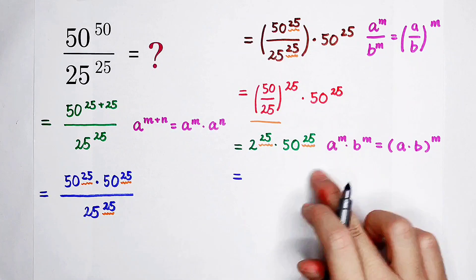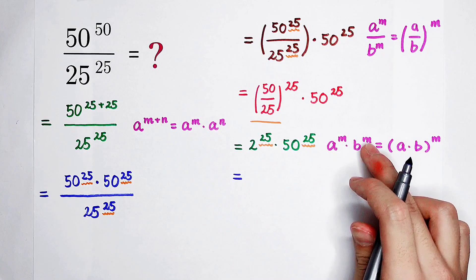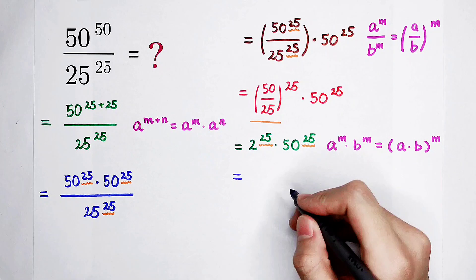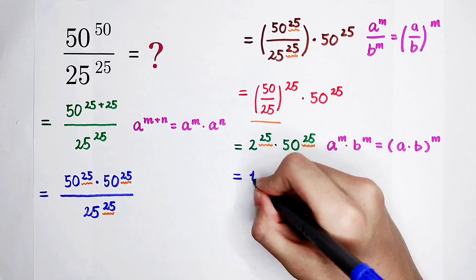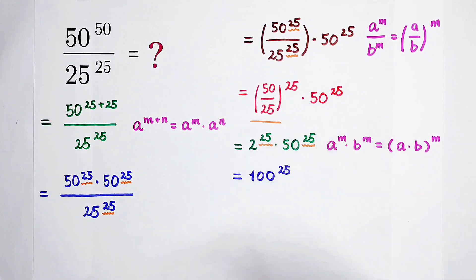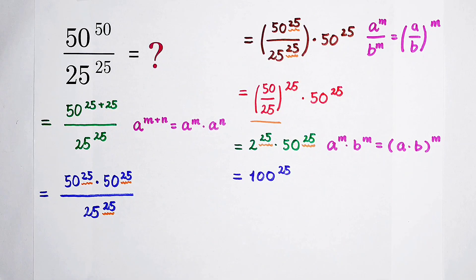So it is, a is 2, b is 50, and m is 25. So it is a times b, 2 times 50. Very easy. It is 100. The exponent is 25. Now, have we done? Definitely, no.